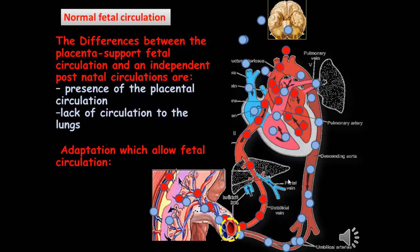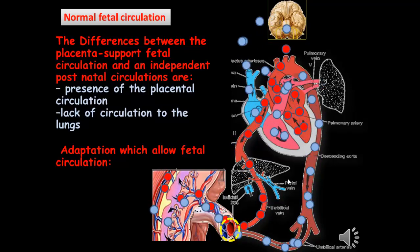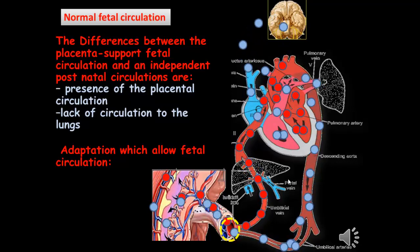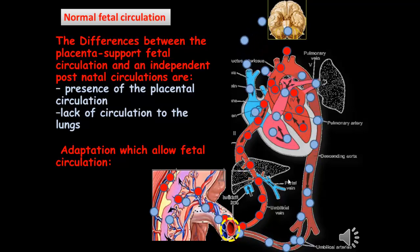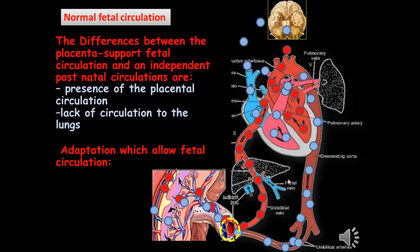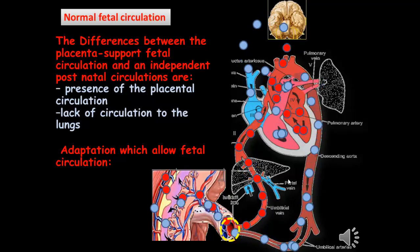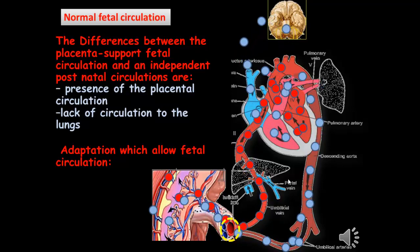Some blood travels from the right atrium to the right ventricle to pass through the pulmonary trunk, but most of the blood bypasses the pulmonary artery and moves directly to the aorta through the ductus arteriosus. Deoxygenated blood returns to the placenta via the umbilical artery, originating from the internal iliac near the bladder.